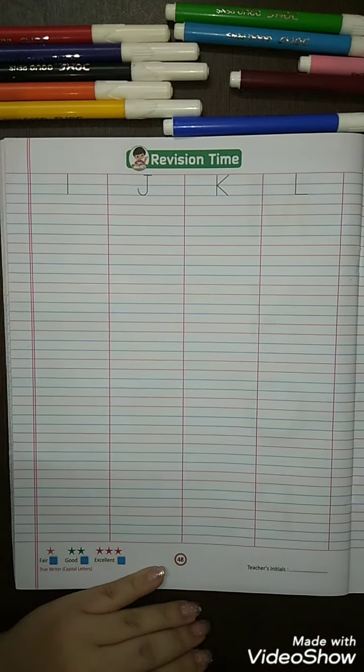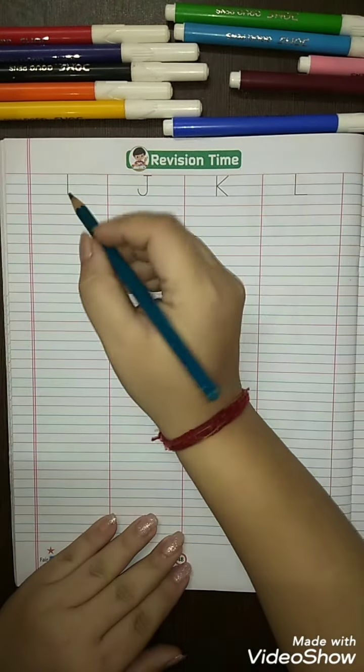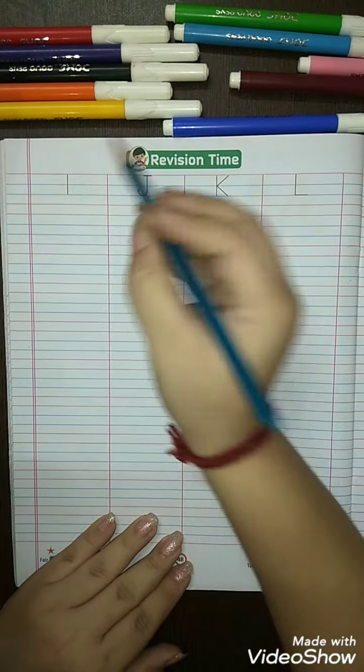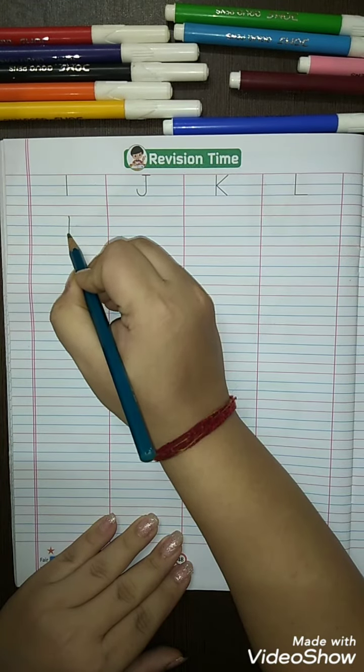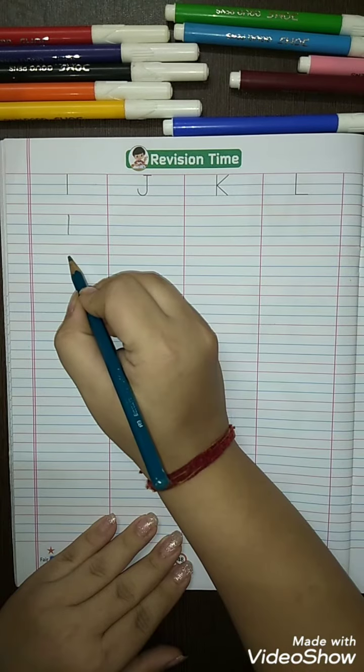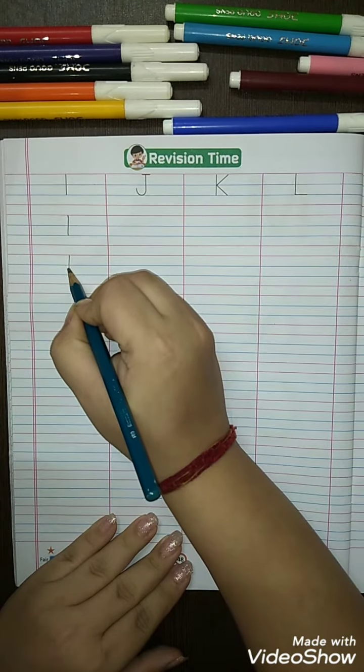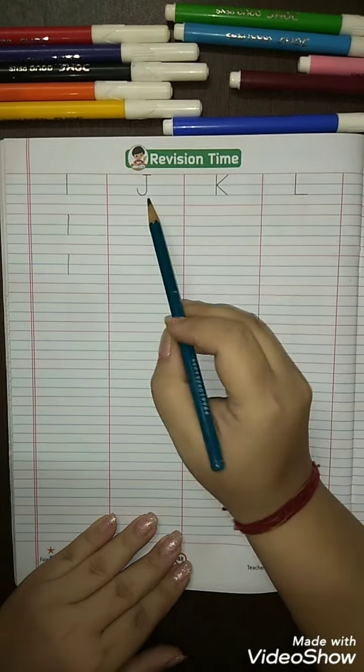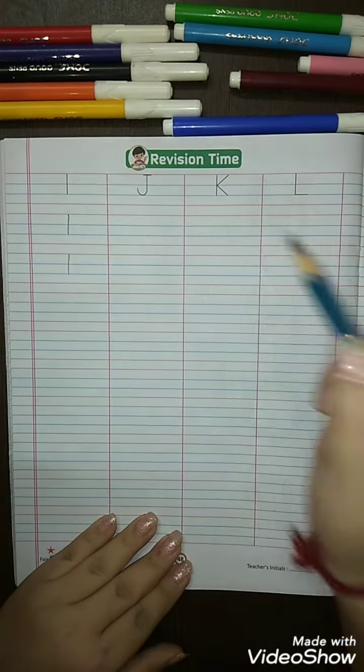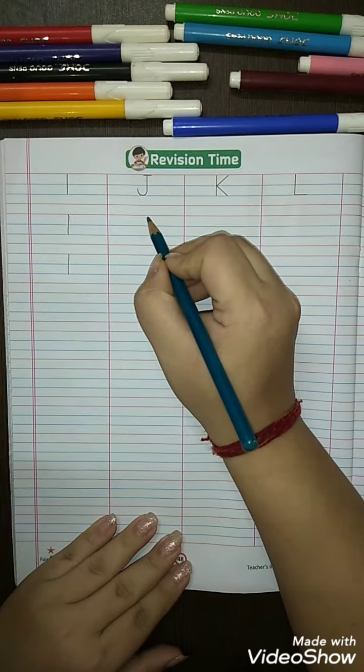Okay, let's start. First alphabet is I. Make a standing line. I, I for ice cream. Make a standing line, I for ice cream. Now J, J for jug, so make a standing line.